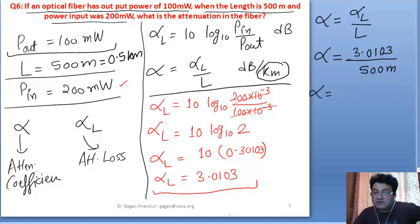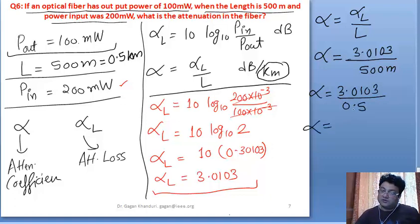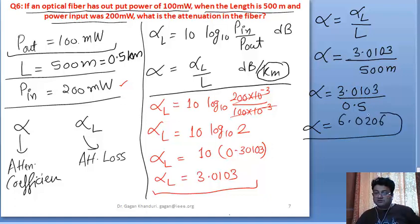I'll write it as 3.0103 divided by 0.5. To find this, just multiply the numerator by 2. It becomes 6.0206. This is the value of alpha.